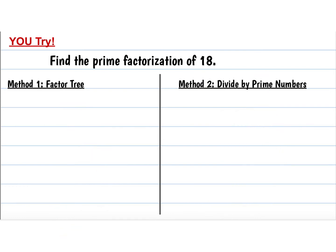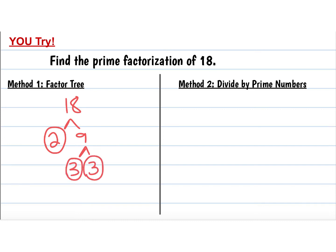Now I want you to pause and try this on your own before you make a decision of which method you like better. Try both of them through 18 — the factor tree and the divide by primes. For the factor tree, start with 18. Two numbers that multiply to make 18 — we cannot use 1 and 18, because 1 is not a prime number. I'm going to use 2 and 9. You could also have started with 3 and 6. 2 is prime, so I'm going to circle it. 9 — two numbers that multiply to make 9 would be 3 and 3, both of which are prime numbers, so I'm going to circle them. I'll write it out least to greatest in expanded form, and then rewrite it in exponential form: 2 times 3 squared, because there are two 3s.